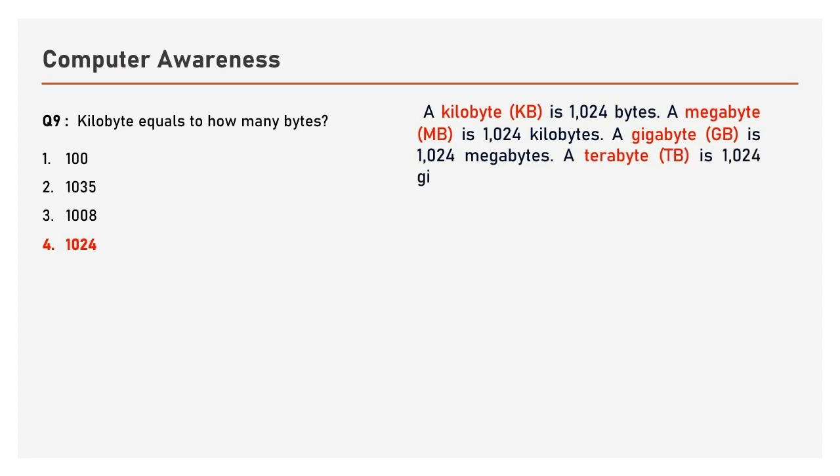A megabyte (MB) is 1024 kilobytes. A gigabyte (GB) is 1024 megabytes. A terabyte (TB) is 1024 gigabytes.